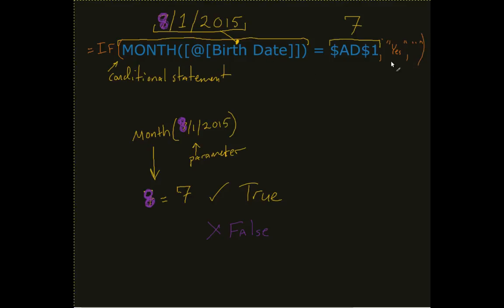In this case, if it's true, we print out the word 'yes'. If it's false, we print out a blank line. Now why is this important?